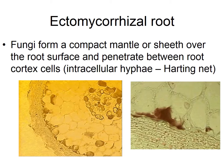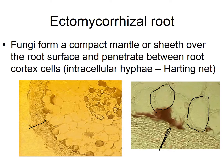Ectomycorrhizae are called 'ecto' because those fungal hyphae form a compact mantle or sheath around the root surface. Sometimes they can penetrate the cortex — the root cortical cells — forming intracellular hyphae called the Hartig net. You can see the hyphae from the epidermis surrounding the cortex cells here, and the hyphae on the outer root surface. That's the key characteristic of ectomycorrhizae: it stays outside the plant cell, surrounding the root and cortex, but does not penetrate into the cells.